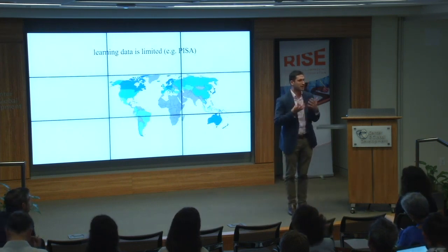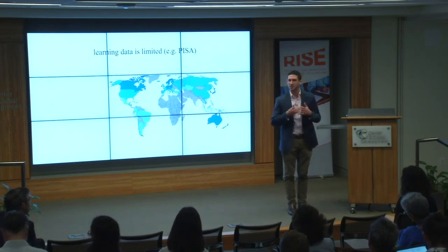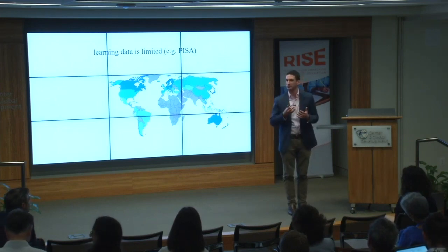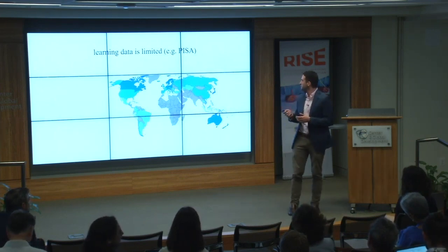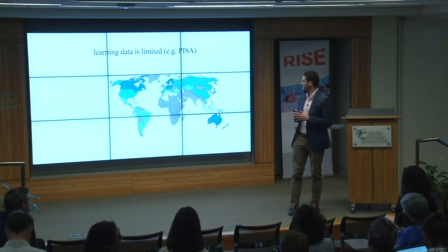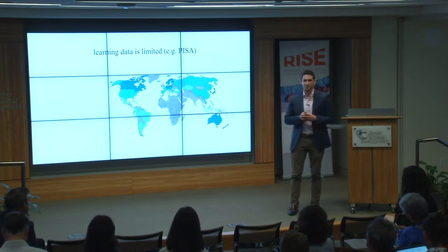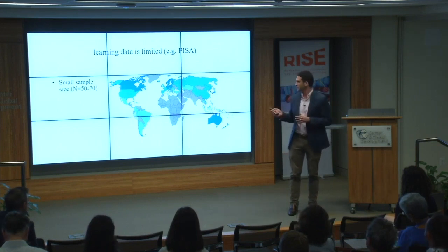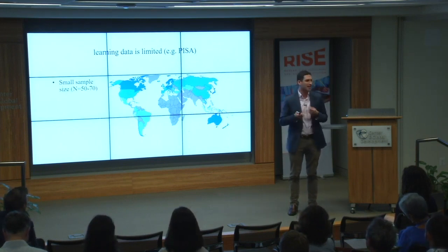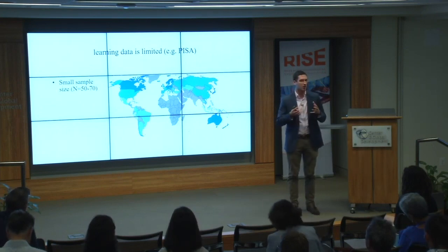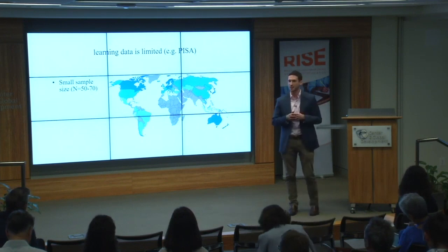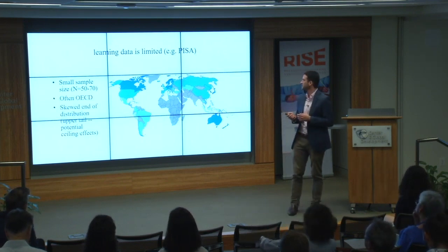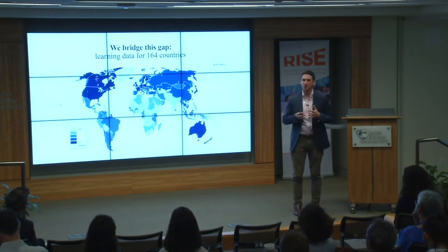There are assessments that do measure learning internationally — PISA, TIMSS, PIRLS — but they mostly cover North America, Europe, some Asia, and some Latin America. There is a huge omission in sub-Saharan Africa and many other countries. The sample size is only about 50 to 70 countries, so it's really a small sample representing a certain tail of the distribution, meaning there's a lot we're not learning from these assessments alone.